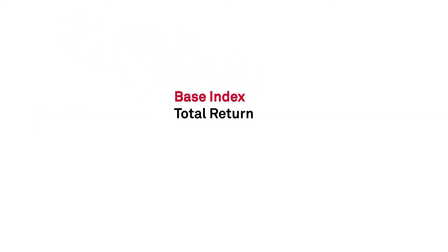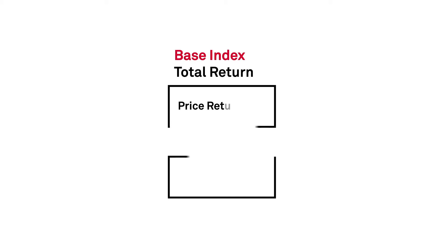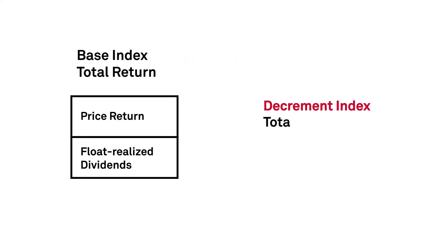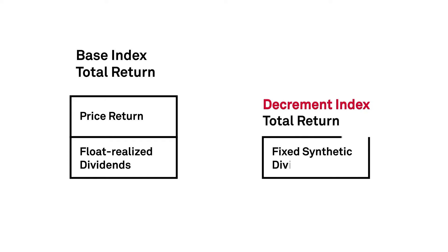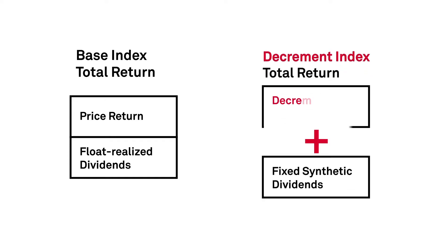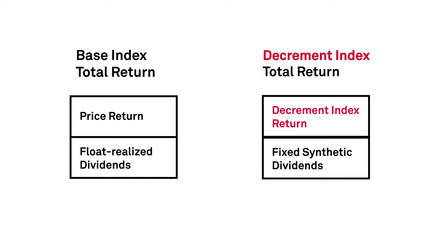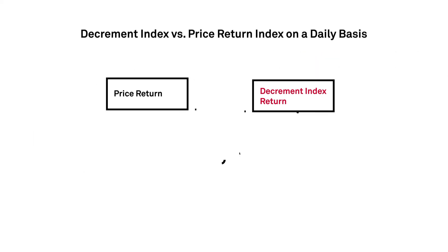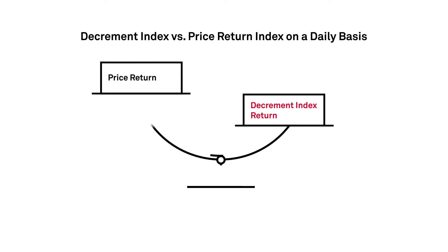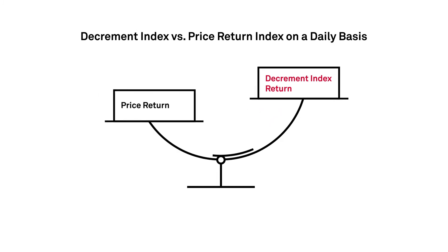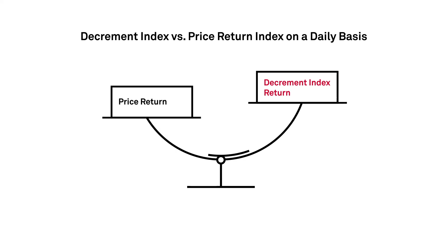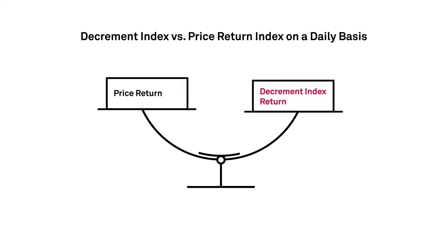While total return for a base index comprises price return and float realized dividends, from a decrement perspective, the fixed synthetic dividends and decrement index return compose total return. While the calculation route may differ, the end result is that a parity relationship exists between the two indices with dividends added, which could have important practical implications for end users.